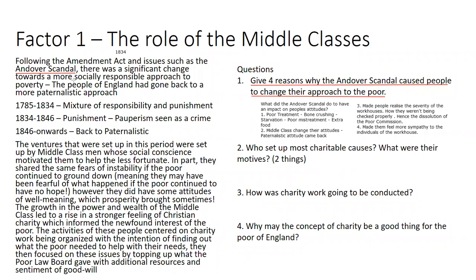There was a significant change towards a more socially responsible approach to poverty — meaning it became the job of the people to help those less well off. England moved through phases: 1785–1834 was a mixture of responsibility and punishment with poorhouses, outdoor relief, and cooperative movement beginnings; 1834–1846 was a period of punishment where pauperism was seen as a crime caused by idleness; and from 1846 onwards, society returned to the paternalistic attitude that we must help one another.